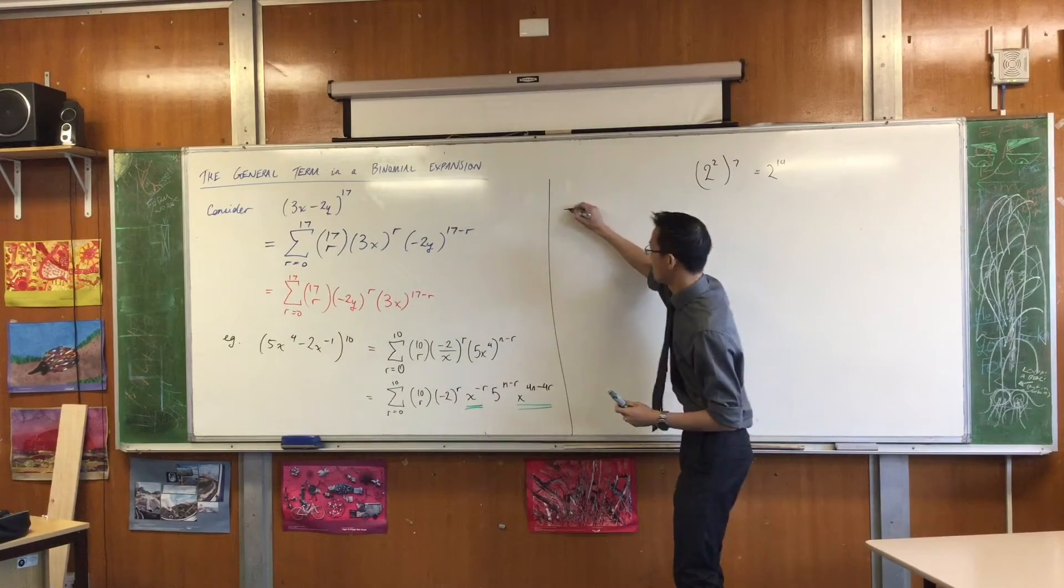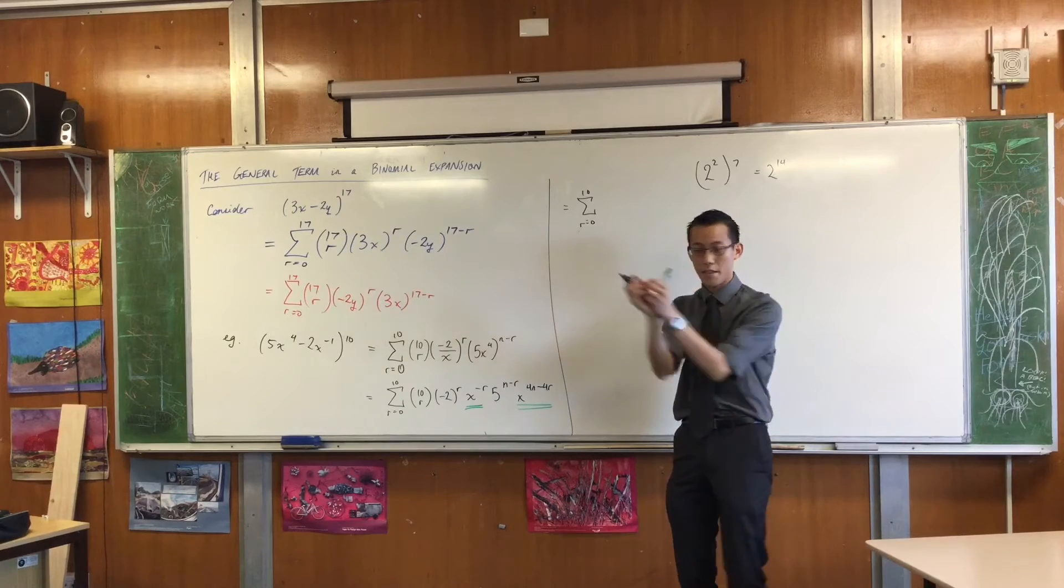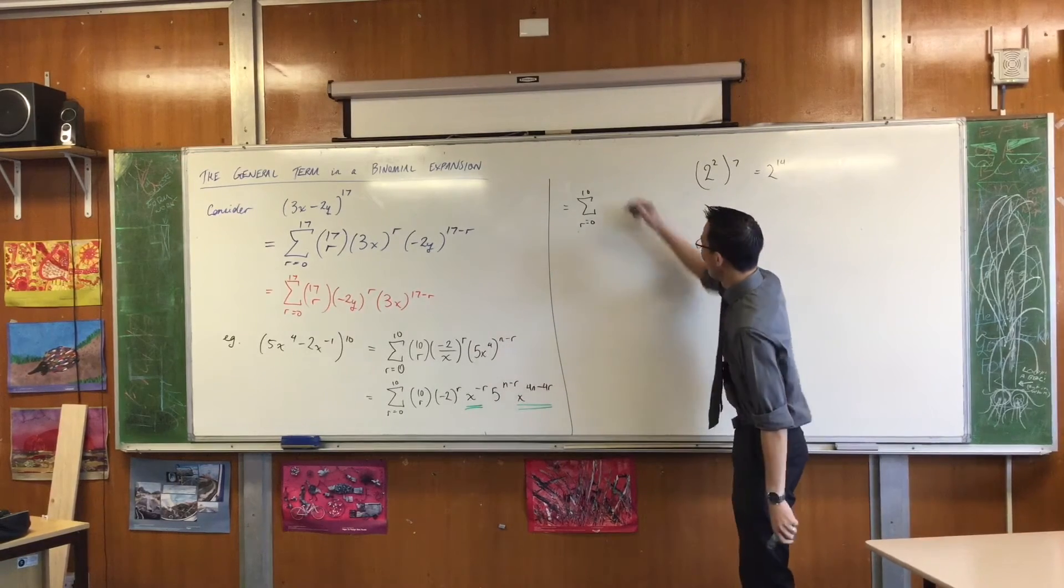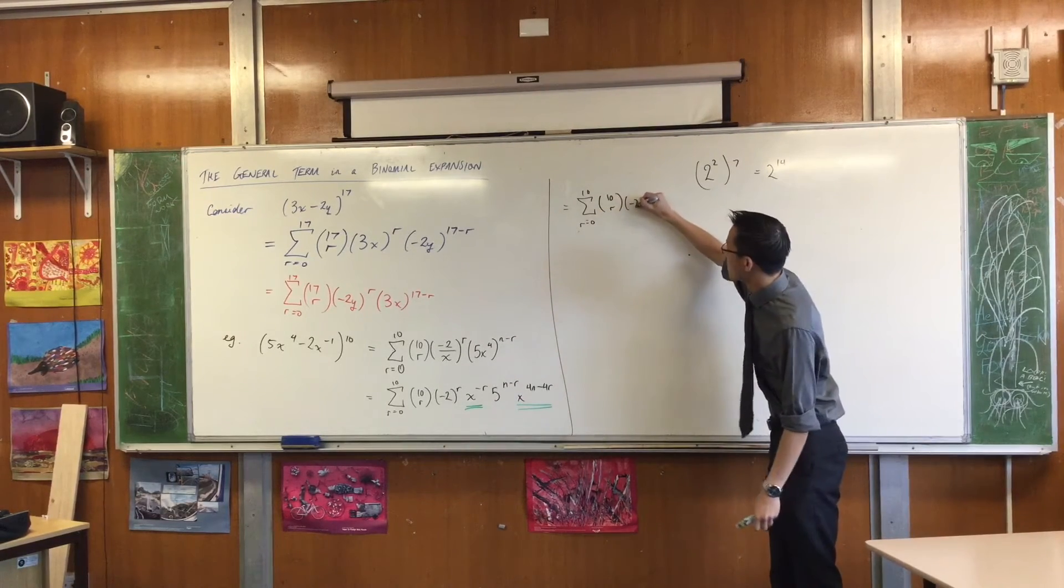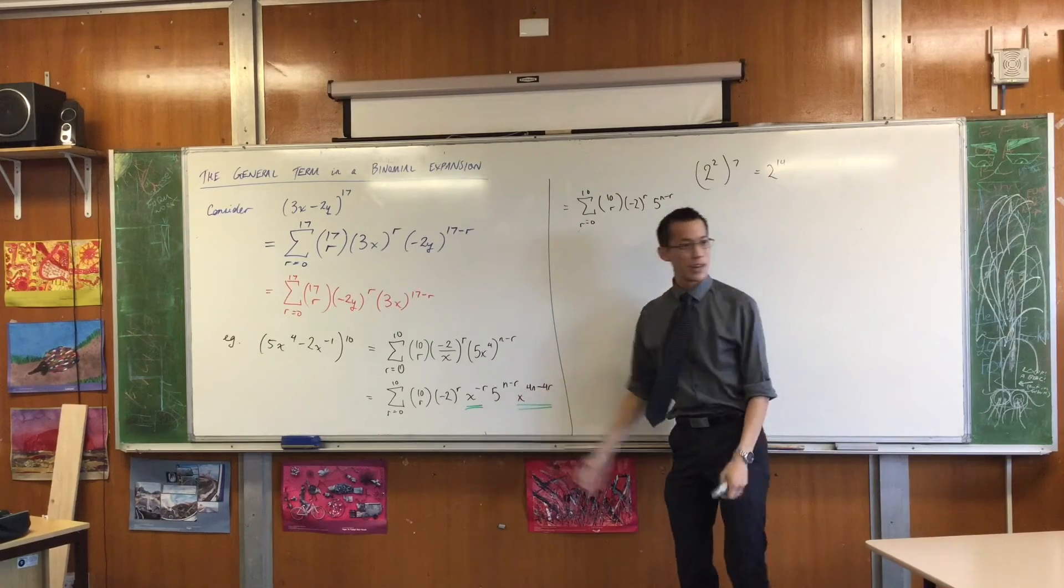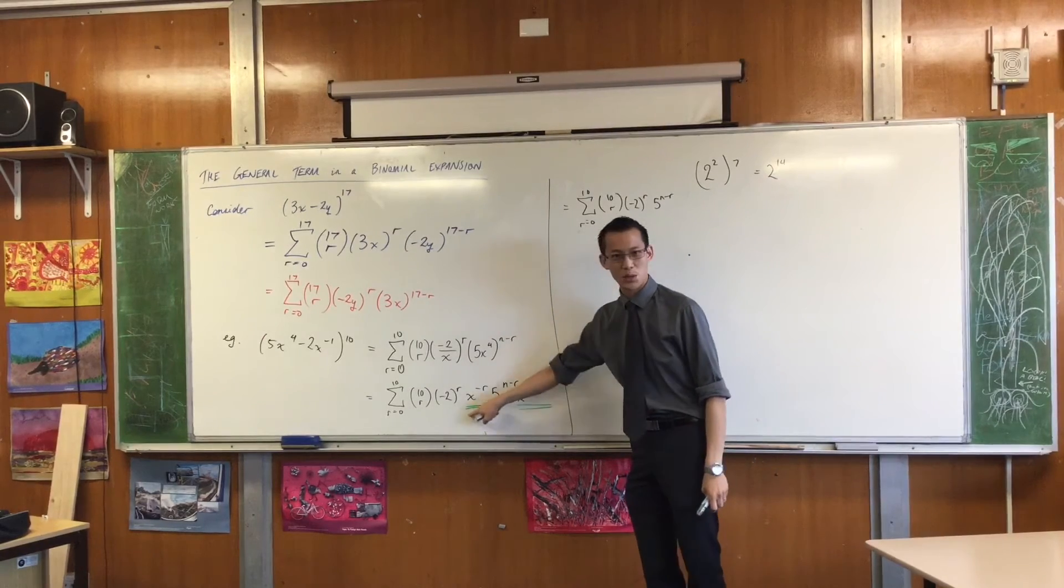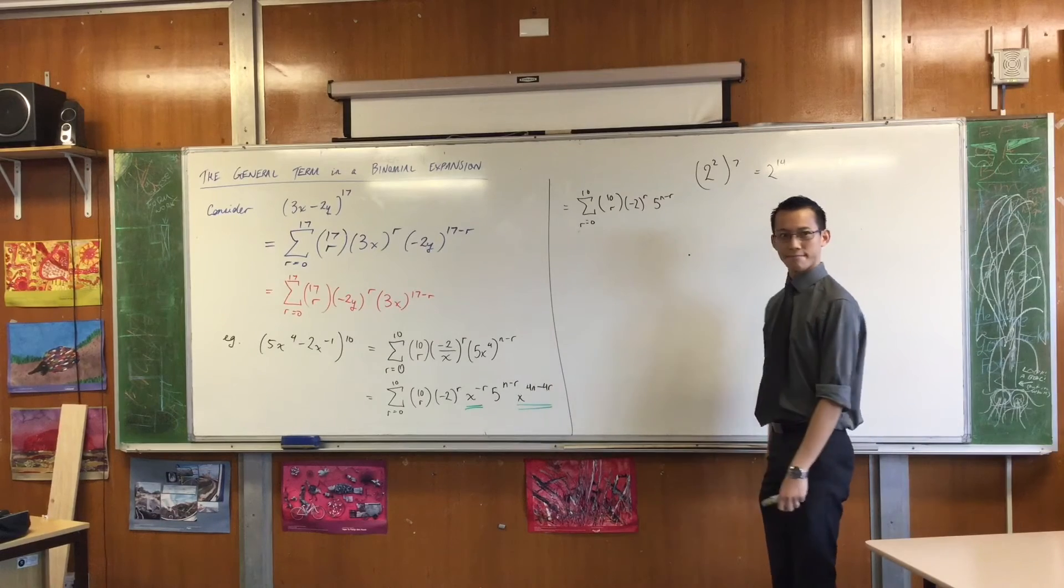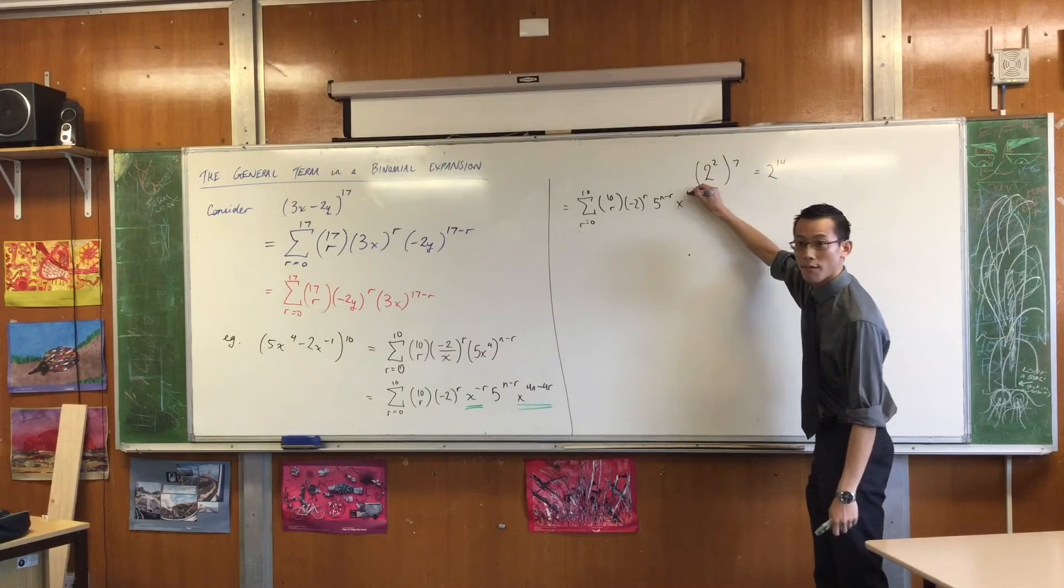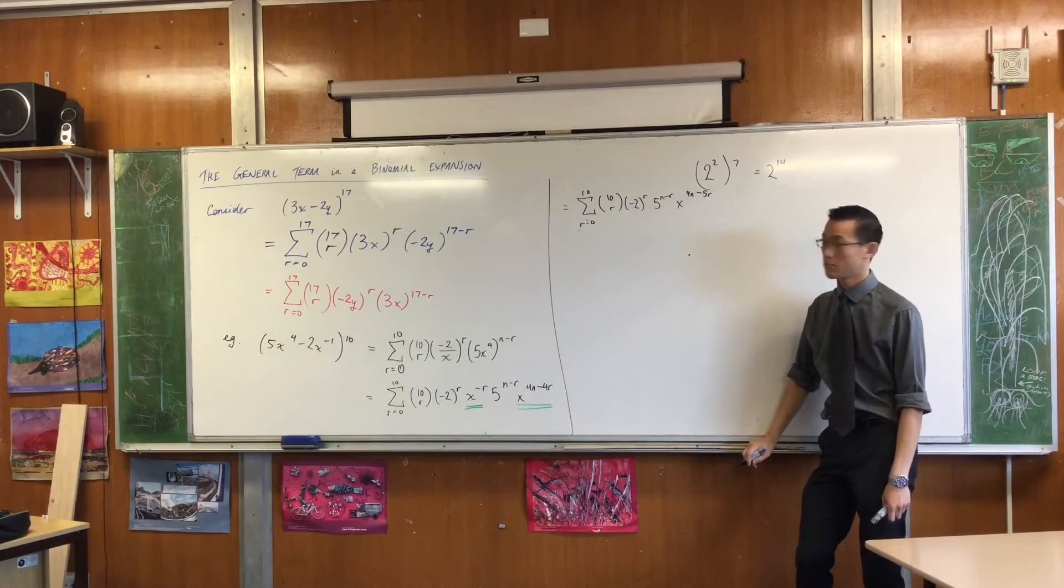So I'm almost finished with my general term, r equals 0 to 10. I'm going to put all the numbers to one side and then I'm going to have all the xs to one side. I can see 1, 2, 3 parts of this long, awful term. There's the binomial bit. There's the first number and there is the second number. And then I've got all these xs. Well, now that I've multiplied these together, I actually can just do an index law with them. When you multiply numbers with the same base, what do I do with their powers? I add them, right? So this looks like it's going to be x to the 4n minus 5r. So far, so good.